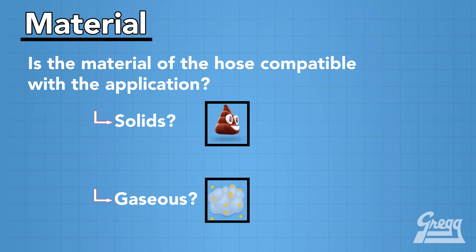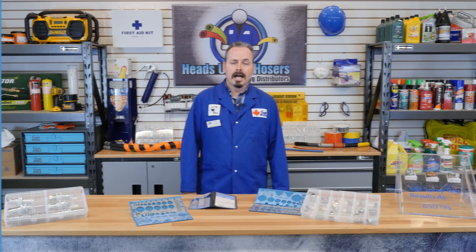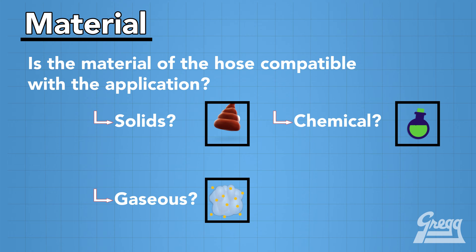If it is involved in a gaseous application, are those gases inert, meaning they won't affect the hose, or are they volatile gases? And lastly, regarding chemical applications — are there chemicals that are going to be flowing through the hose?